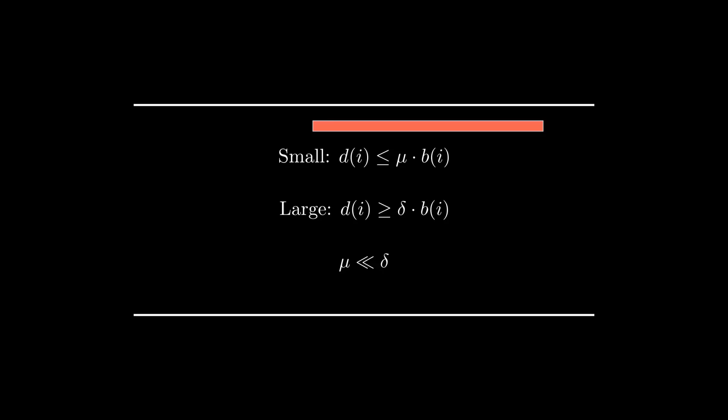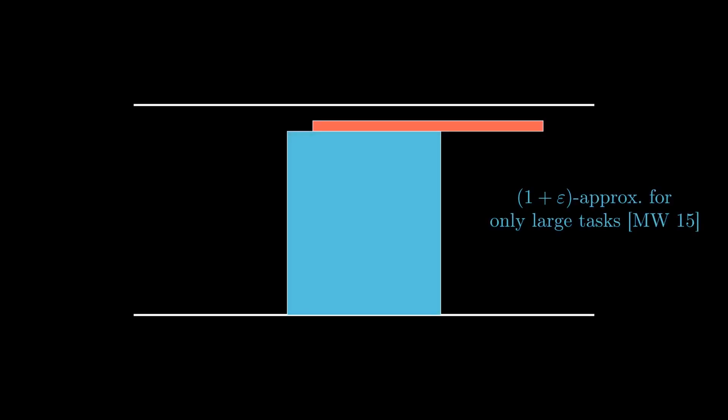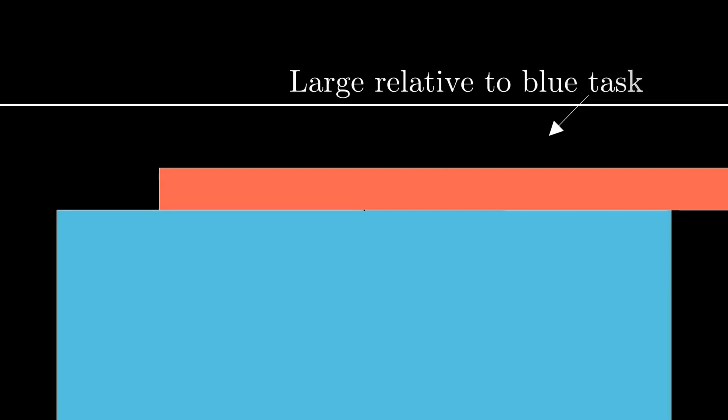If we have general capacities, we have to be more careful with the definition of capacity. In the uniform case the capacity is simply a number, but in the general case we have to talk about the bottleneck capacity. The bottleneck capacity of task i, b(i), is the smallest capacity within its range. A task is small if it is smaller or equal to mu times its bottleneck capacity, and large if it is larger or equal to delta times its bottleneck capacity. If we restrict attention to only small tasks, there is a known 1 plus epsilon approximation in polynomial time. The same is true for only large tasks. The difficulty is combining large and small tasks — when large tasks are placed, the remaining capacity is very small, and relative to that remaining capacity, the small tasks appear actually to be large.